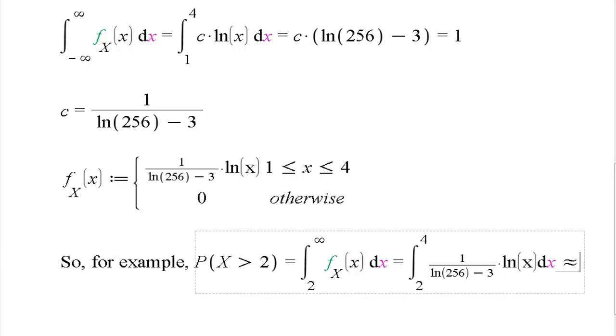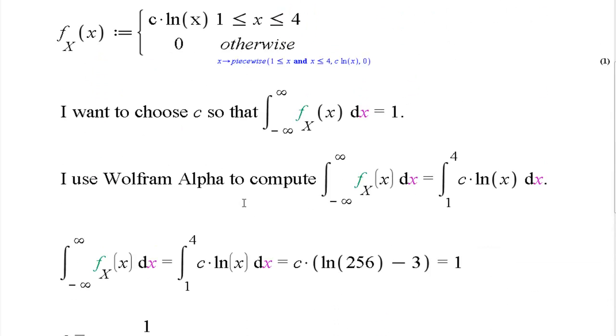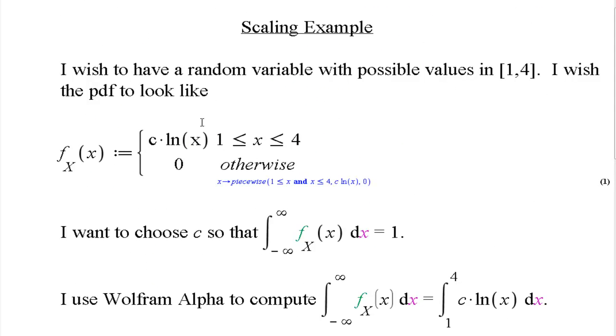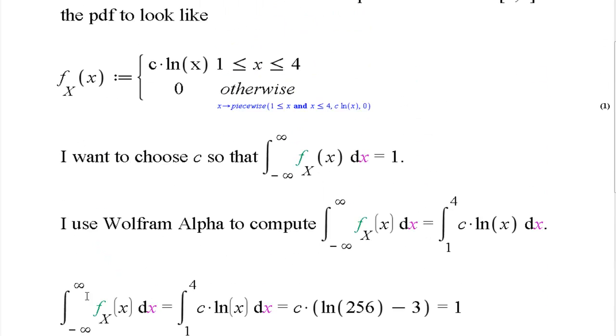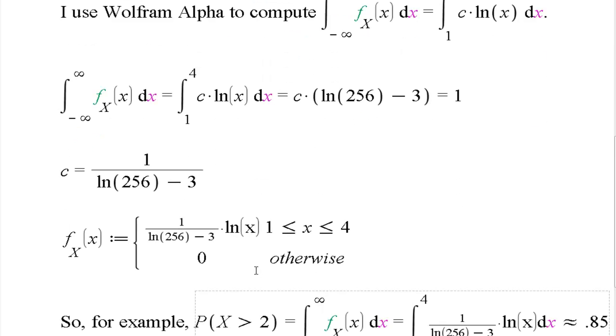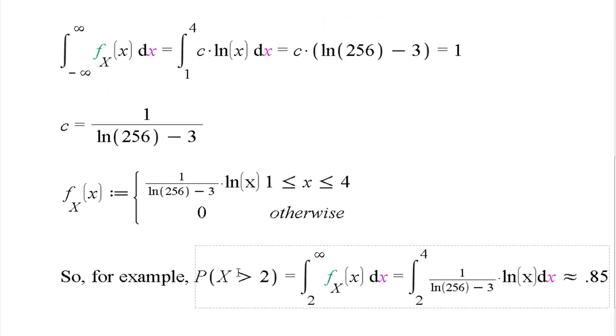That's an example of how to take a function that has a finite integral of this form, or at least has a finite integral for a specified value of that constant, and then choose the constant so that it indeed is a probability density function. We can use it to evaluate probabilities for a continuous random variable like we've done here.